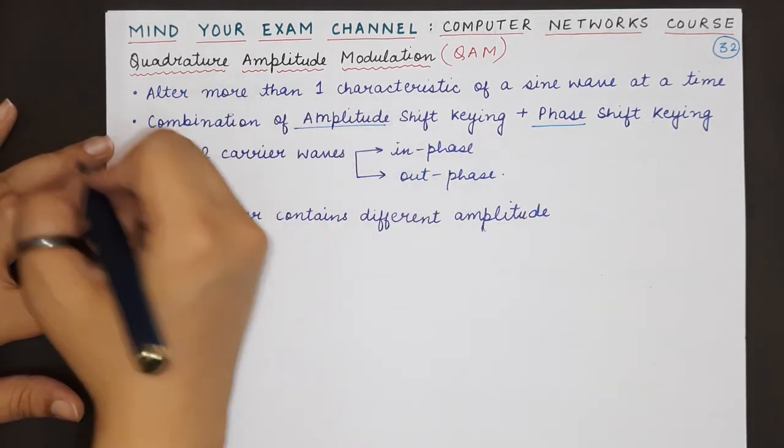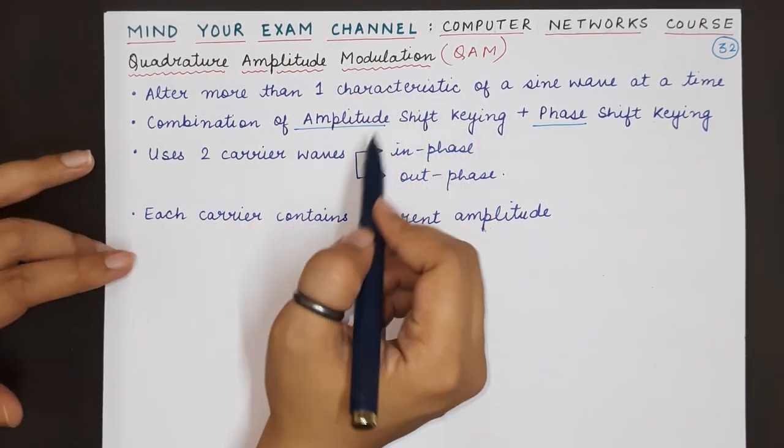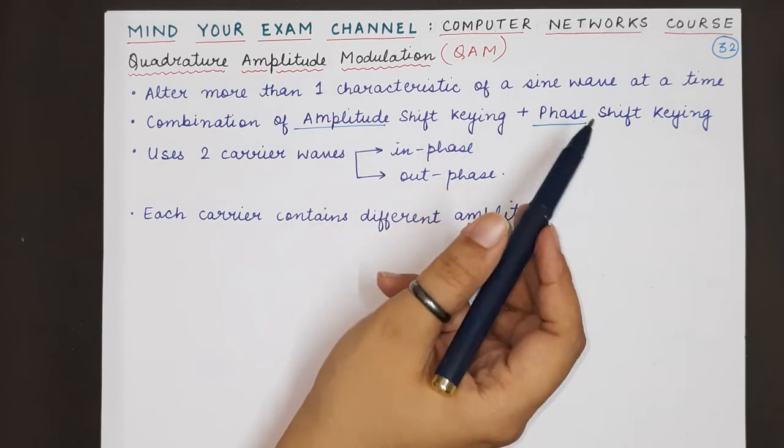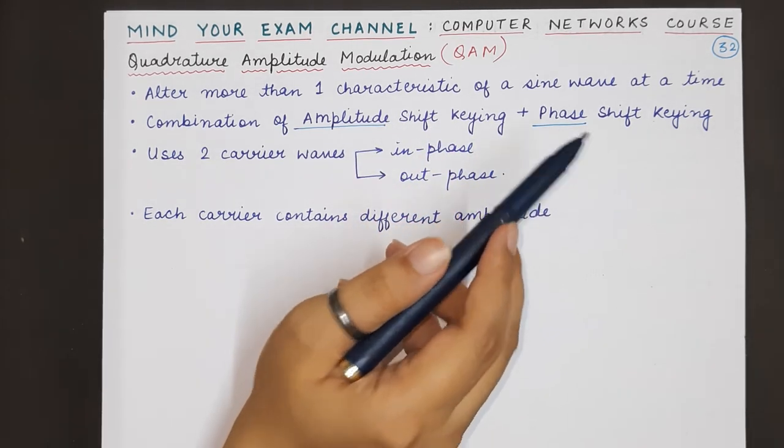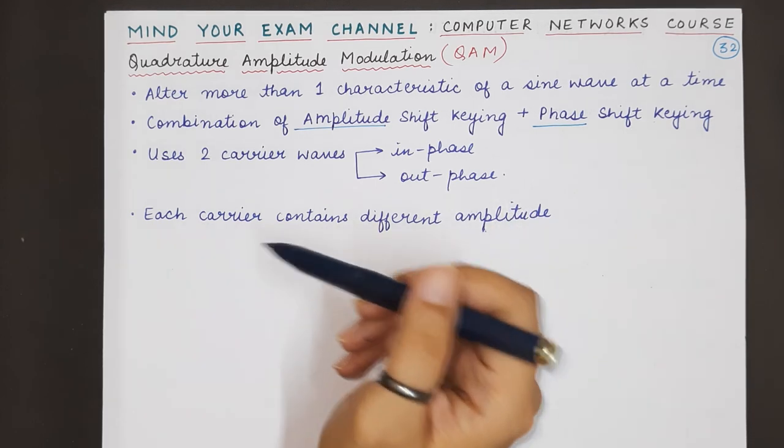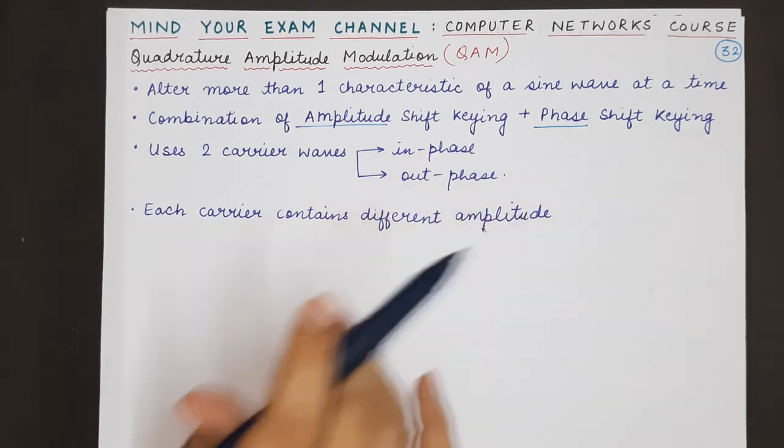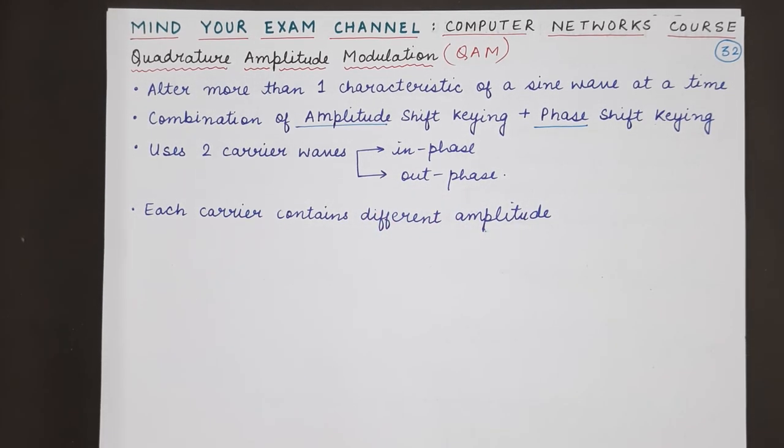This was all about quadrature amplitude modulation. You have to remember that it is a combination of amplitude shift keying and phase shift keying which uses different phases and different amplitudes for each carrier wave. That's all for today's video. Thank you for watching. Till we meet in the next video. Mind your exam.